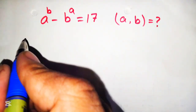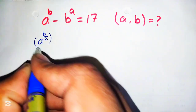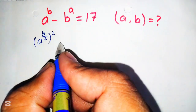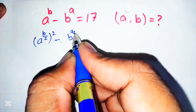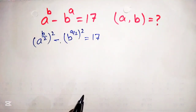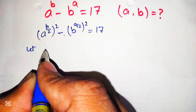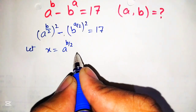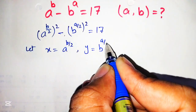First we will rewrite this given equation. We can write a raised to power b as a raised to power b over 2, whole raised to power 2 — this 2 will cancel out and we get a raised to power b again. Similarly, b raised to power a can be written as b raised to power a over 2, whole raised to power 2. Now we take x equal to a raised to power b over 2, and y equal to b raised to power a over 2.